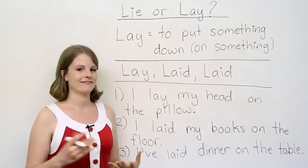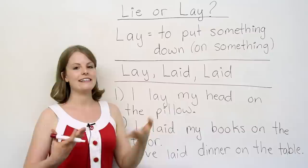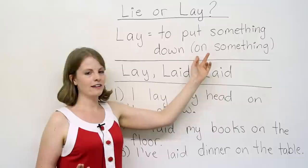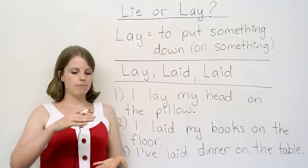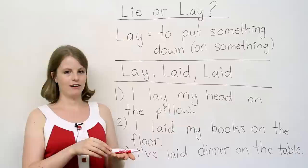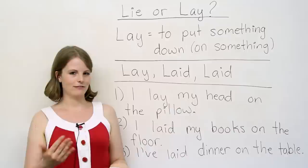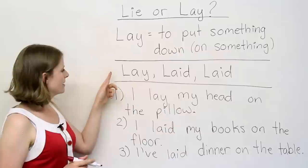So to get started, let's look at the word lay. This is a verb, to lay, and it means to put something down. Oftentimes we have it with the preposition following, on something. So for example, if I put the marker down on the table, I could say, I lay the marker down. Or I lay the marker in my hand. So it's when you put something down, oftentimes on something.